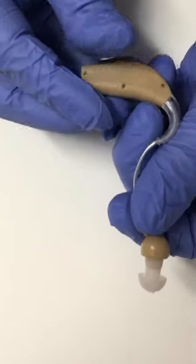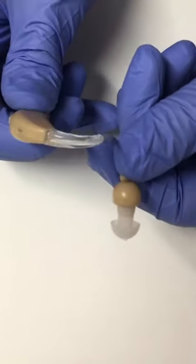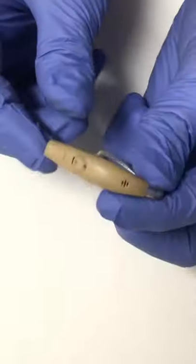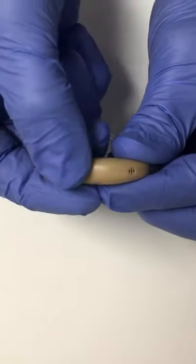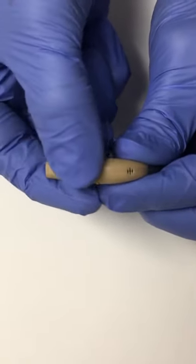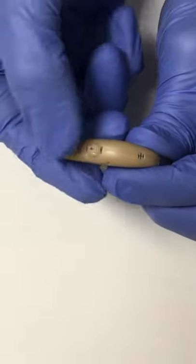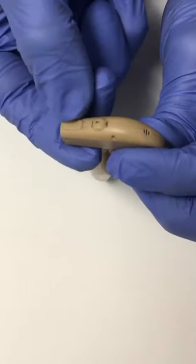Alright, this is a $20 hearing aid from CVS Pharmacy and it has a little volume wheel to adjust the volume here and then it has a button to change different settings.